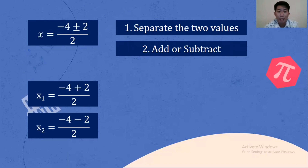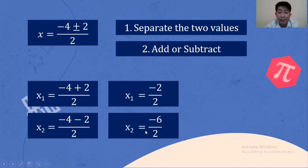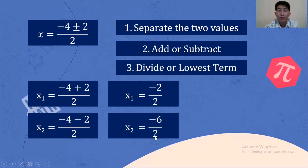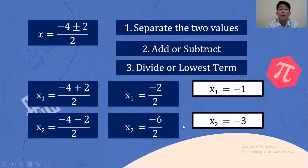Add or subtract as needed. For X sub 1, negative 4 plus 2 is negative 2 over 2. For X sub 2, negative 4 minus 2 is negative 6 over 2. Then divide: negative 2 divided by 2 is negative 1. X sub 2 equals negative 6 divided by 2, that is negative 3. So the values of X are negative 1 and negative 3.